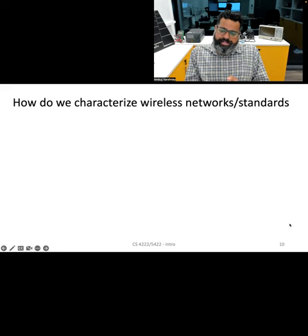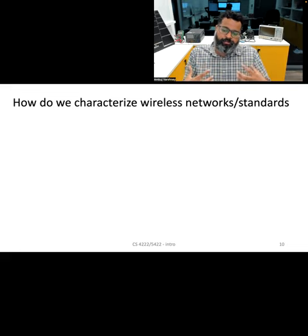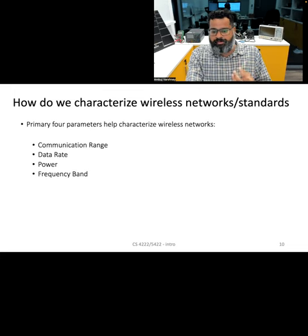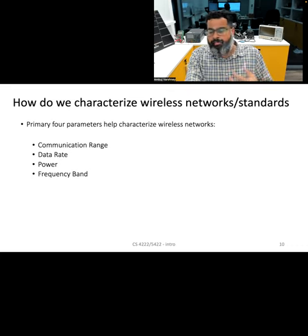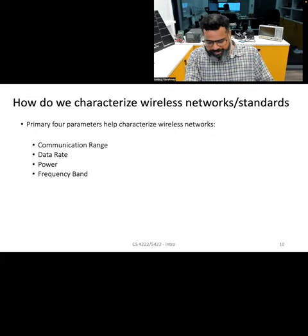Now that we have a deeper understanding of the various propagation modes and real world effects that can impact wireless signals, let's examine how different wireless technologies can be characterized. We can evaluate and distinguish wireless networks and technologies based on four different parameters: communication range, data rate, power consumption, and the frequency or band of operation.